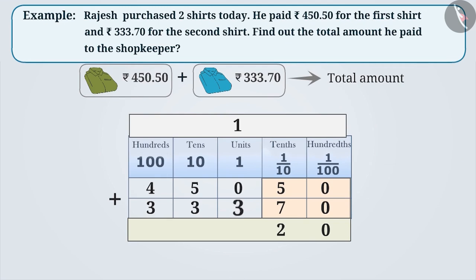0 plus 3 is equal to 3, and adding the carried over 1 results in 4. We must write this in the units place. Similarly, the sum of digits in the tens place is 8 and the sum of digits in the hundreds place is 7. Therefore, the sum of these decimal numbers is 784.20.